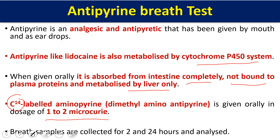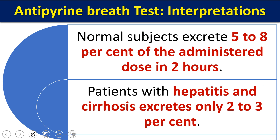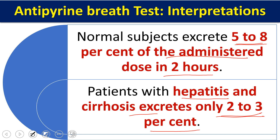Carbon-14 labeled aminopyrine (dimethylamino antipyrin) is given orally at a dose of 1 to 2 microcuries. Breath samples are collected for 2 to 24 hours and analyzed for metabolite formation. In a normal subject, 5 to 8 percent of the administered dose is excreted in two hours. In patients with hepatitis or cirrhosis, excretion drops to only 2 to 3 percent, indicating reduced cytochrome P450 activity.